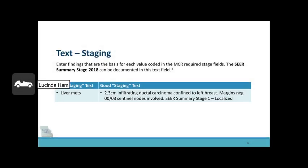Now let's talk about staging text. Enter findings that are the basis for each value coded in the MCR required stage fields. The SEER summary stage 2018 can be documented in this text field. Please see the example below for bad and good staging text.